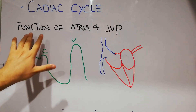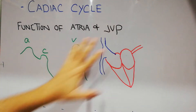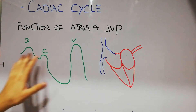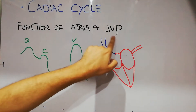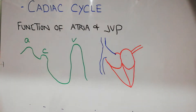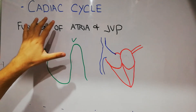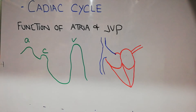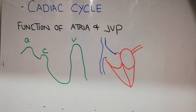Today we are going to discuss the function of atria and the waveform of atrial contraction, that is the jugular venous pulse or JVP. We are discussing the cardiac cycle, and this atrial contraction is an important part of it. The cardiac cycle consists of the filling of the atria, contraction of the atria, then filling of the ventricle, then contraction or systole of the ventricles, and then diastole of the ventricles.